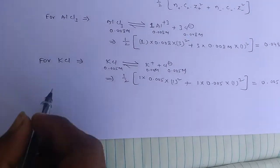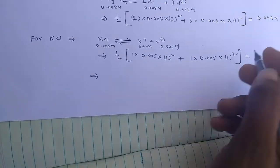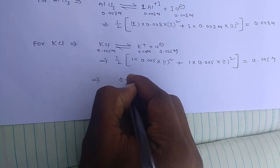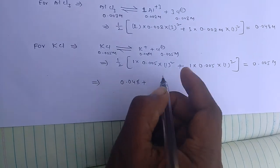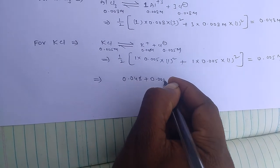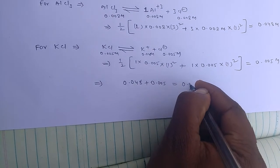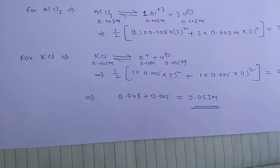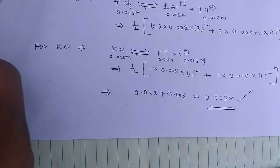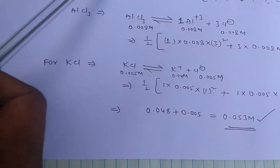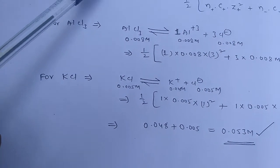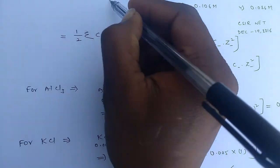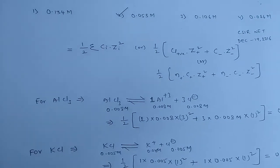For these two solutions, by adding these two ionic strengths, we can get 0.048 plus 0.005, then we can get 0.053 M concentration. This is the ionic strength of the given solutions of aluminum trichloride and potassium chloride. If you check the option, that is 0.053. So option 2 is the right one for the given problem.